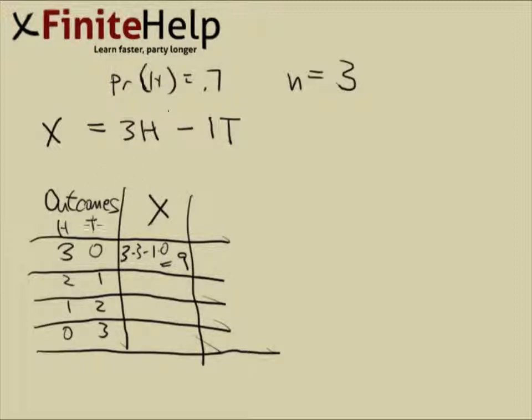And the next one is going to be 3 times 2 minus 1 times 1, so 5. And the next one, 3 times 1 minus 2, so it's going to be 1. And then negative 3.